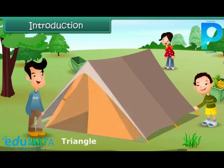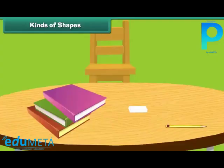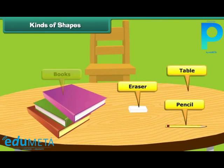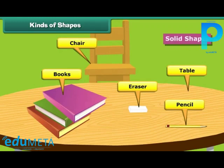In this lesson, you will learn about plain and solid shapes and kinds of shapes. We see different shapes all around us — pencils, erasers, tables, books, chairs, etc. They are called solid shapes.